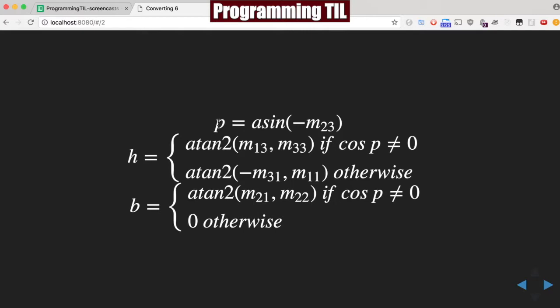As you can see here, we have our PHB, pitch heading bank as per usual, and the formulas that we were given in the previous episodes. We have the sine of the M23, that's the matrix position, negative.